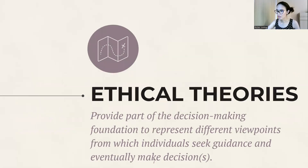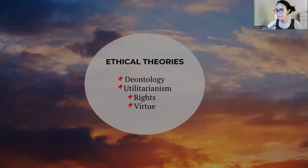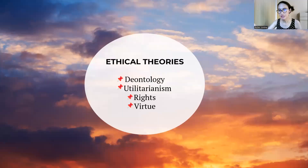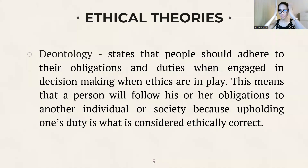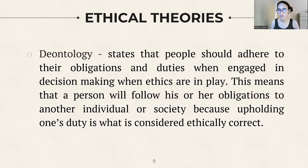The following slides will discuss ethical theories used as a basis for making decisions. The ethical theories presented include deontology, utilitarianism, rights, and virtue. The first ethical theory is deontology. It states that people should adhere to their obligations and duties when engaged in decision-making. This means that a person will follow his or her obligations to another individual or society, because upholding one's duty is what is considered ethically correct.